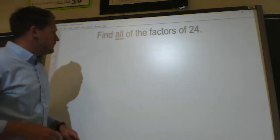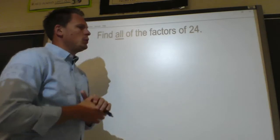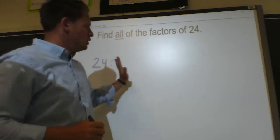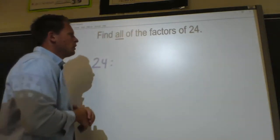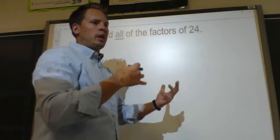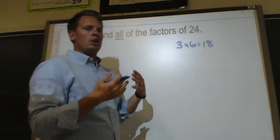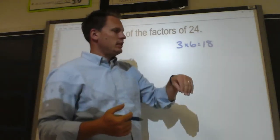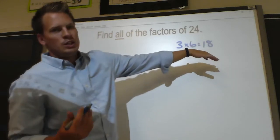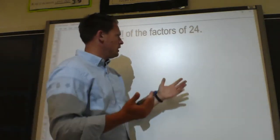It says find all the factors of 24. The first thing you want to do when finding factors is put the number itself — so 24 — then a colon, and we're going to list the factors of 24. Factors are any numbers that are used in a multiplication problem. So 3 times 6 equals 18: 3 and 6 are called factors — they're factors of 18. Since 3 and 6 are factors of 18, 18 is what we call a multiple of 3 and 6.